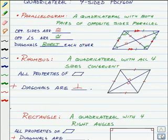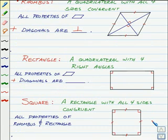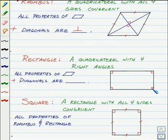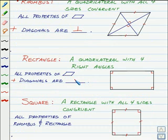The next quadrilateral we're going to look at is a rectangle. It's a quadrilateral with four right angles. It also has all the properties of a parallelogram, and it has diagonals that are congruent to each other.